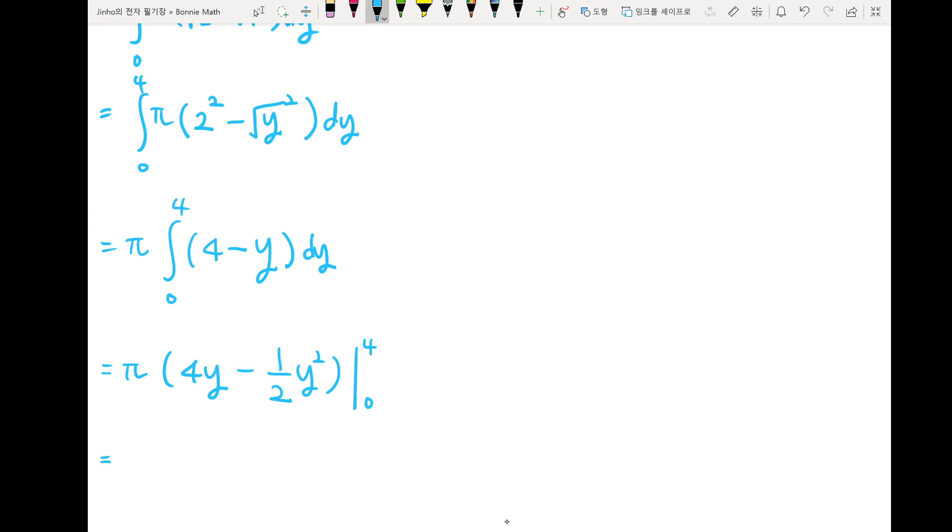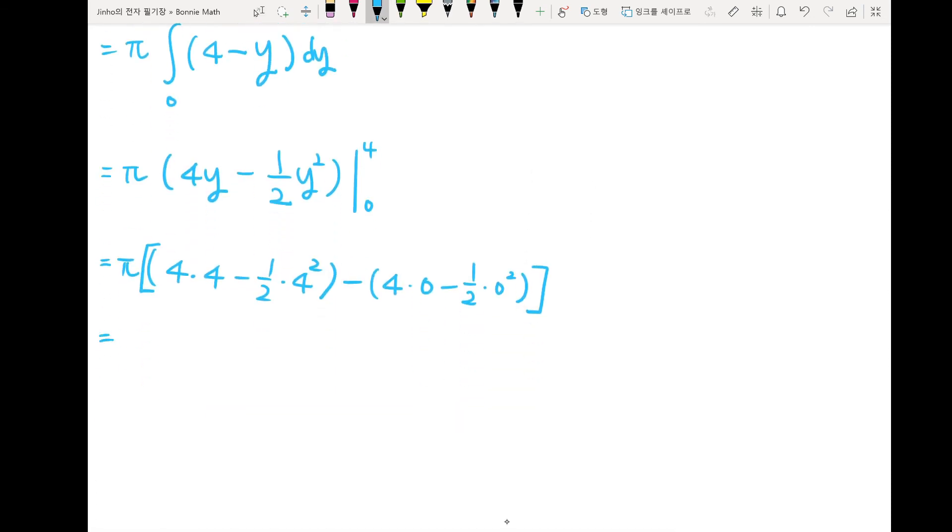Surprisingly, but obviously, we will get the same answer when we are using shell method. π times 4 times 4 minus 1 over 2 times 4 square minus 0. 4 times 0 minus 1 over 2 times 0 square. So obviously, the last part becomes 0. And the first part, 4 times 4 is 16, 16 divided by 2. So we also get 8π.